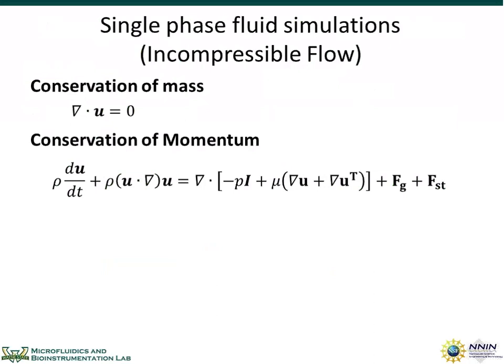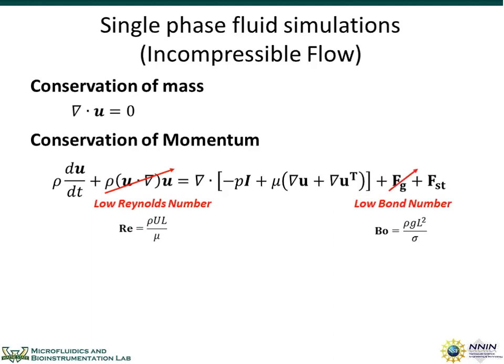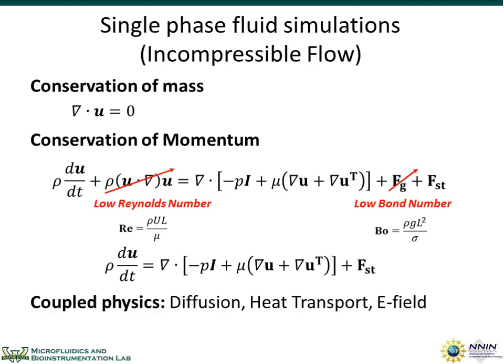The equations for single-phase microfluidics start with conservation of mass, which equals zero for incompressible flow, and conservation of momentum—the Navier-Stokes equations in incompressible form. At low Reynolds number, the inertial terms cancel out, and at low Bond number, gravity is ignored. So the equation simplifies considerably. In addition to these, you have coupled physics modeling chemical diffusion, heat transport, or electric fields.